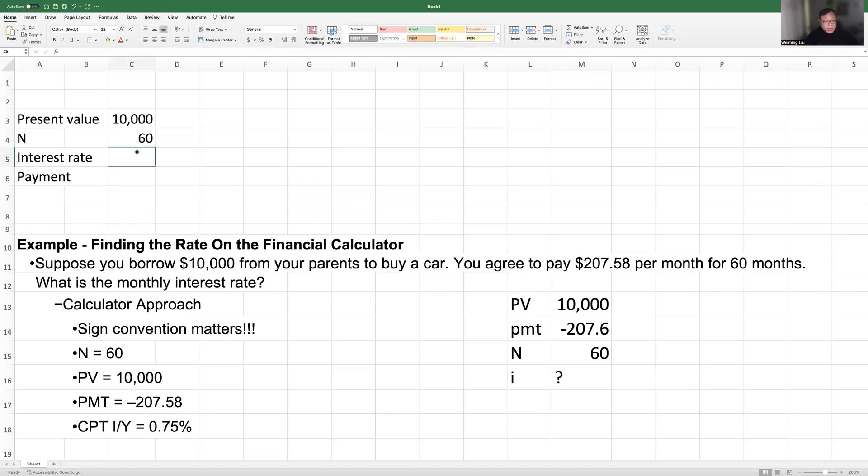Interest rate, we don't know. Let's just put in zero now, because this is what we are looking for. Payment. So in Excel, there is a payment function. The payment, PMT. Payment function has different parameters. The first parameter is rate. So that's this one. The second parameter is NPR. So that's N. And the next one is the present value, which is $10,000.